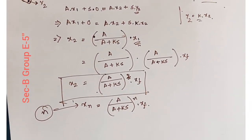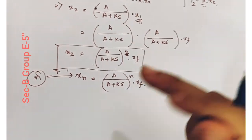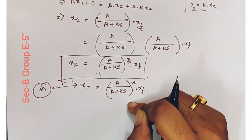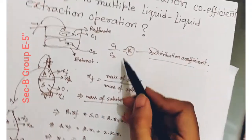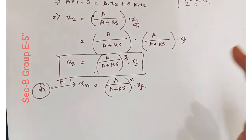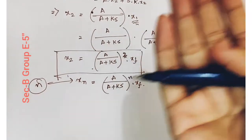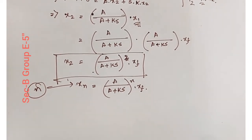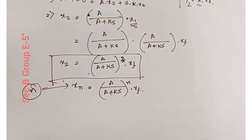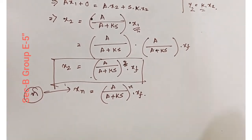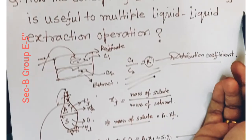From this equation we can determine the concentration of the solute in the Nth raffinate. This is the importance of the distribution coefficient — using it in multiple liquid-liquid extraction operations, we can very easily determine the concentration of the solute in the raffinate portion after any number of extraction steps.